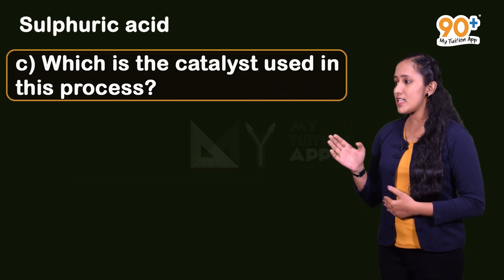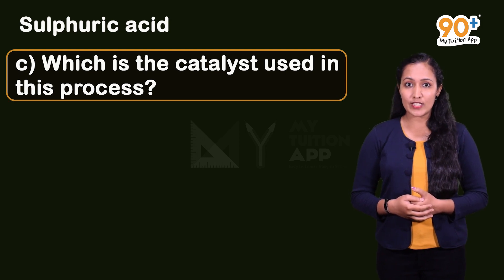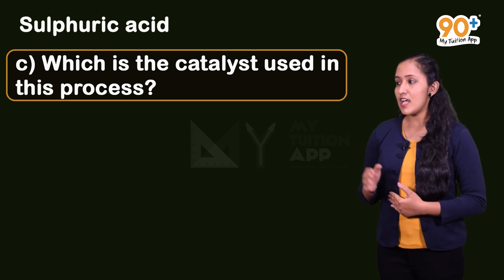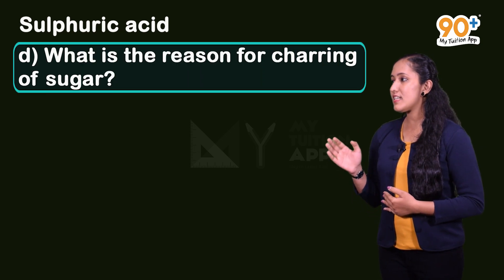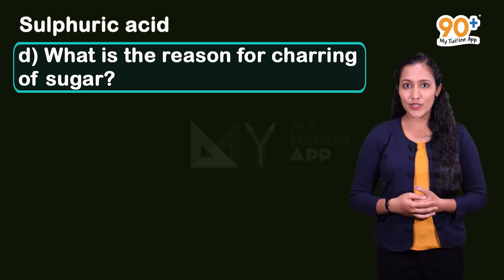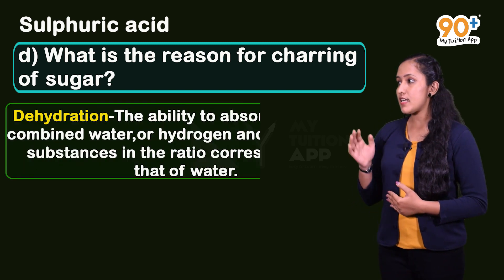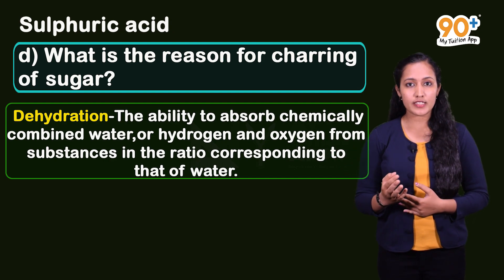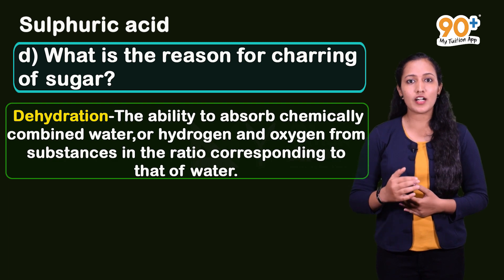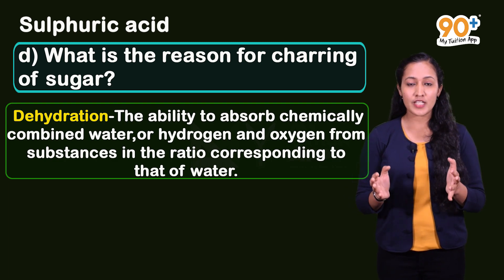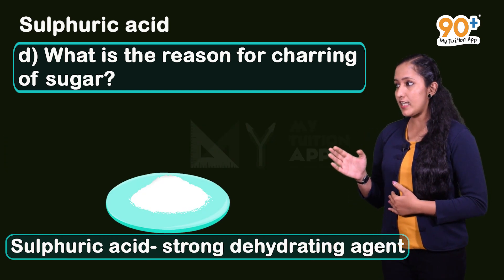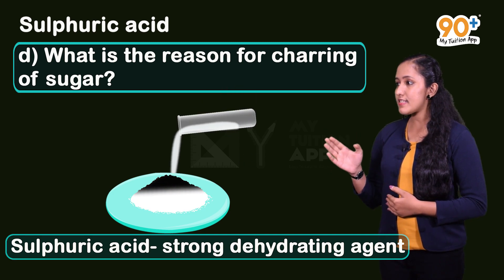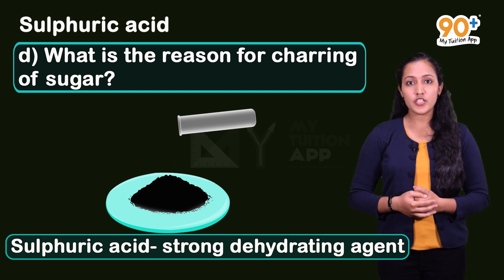C - which is the catalyst used in this process? In the contact process, the catalyst used is vanadium pentoxide, that is V2O5. D - what is the reason for charring of sugar? We know that sulfuric acid absorbs the hydrogen and oxygen chemically combined in a substance as water. This process is called dehydration, that is nirjali garanam. Sulfuric acid is a strong dehydrating agent. When sulfuric acid is added to sugar, it absorbs the water present in sugar, and that is why charring occurs.